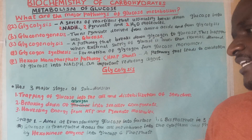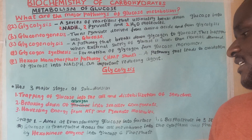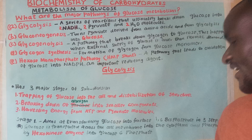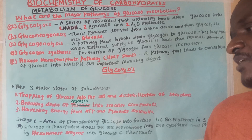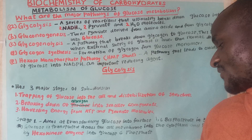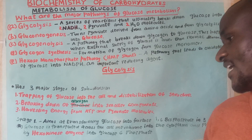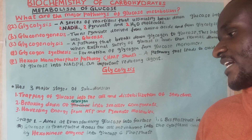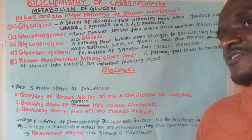Stage one aims at transforming glucose into fructose-1,6-bisphosphate in three steps. Step one: glucose is transported across the cell membrane into the cytoplasm and then phosphorylated by an enzyme known as hexokinase into glucose-6-phosphate.